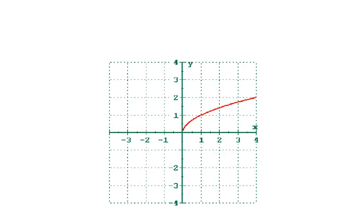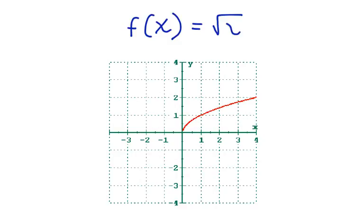Here's that graph again. This graph has a function that goes with it. This is actually the graph of the parent function for square root functions. We can say that f(x) is equal to the square root of x, and that is represented by this graph.